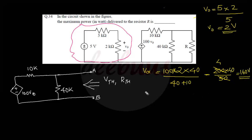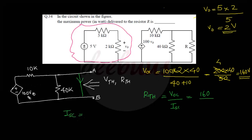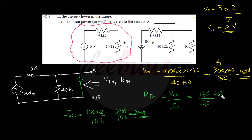For Thevenin resistance with a dependent source, we use R_th = V_oc / I_sc. The short-circuit current I_sc = 100V₀ / 10k, since the 40k is bypassed. With V₀ = 2 V: I_sc = 200/10k = 20 mA. Therefore R_th = 160/20 mA = 8 kΩ.